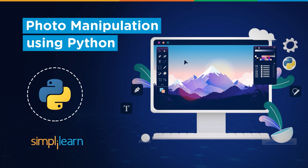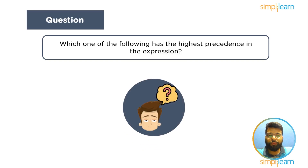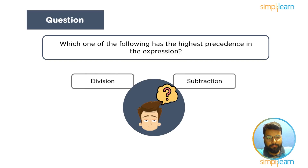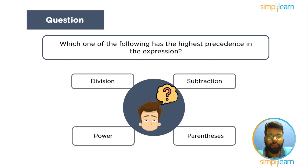Before we begin, if you love watching tech videos, subscribe to our channel, like the tutorial, and hit the bell icon to never miss an update. Here's a quiz question: which one of the following has the highest precedence in an expression? Option 1: division. Option 2: subtraction. Option 3: parenthesis (par). Option 4: parentheses. Please answer in the comment section below — we'll update the correct answer in the pinned comment.